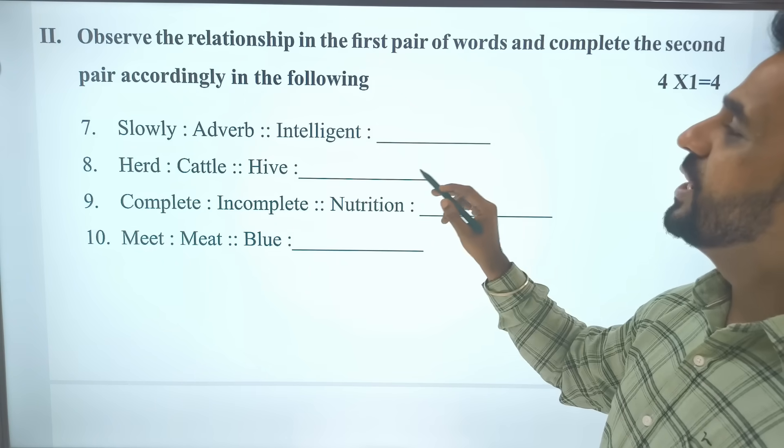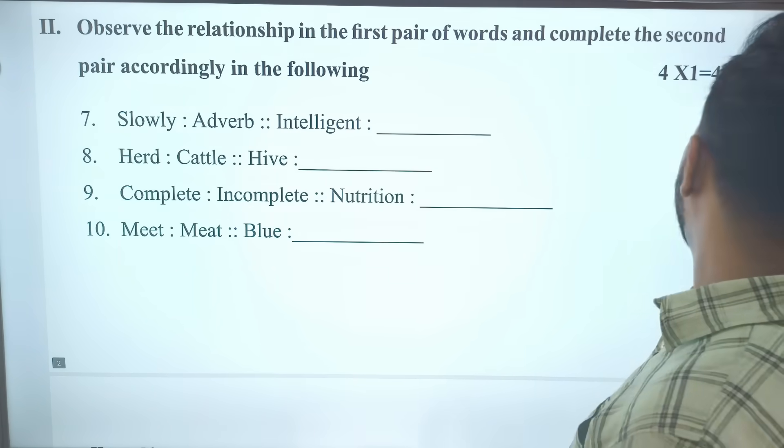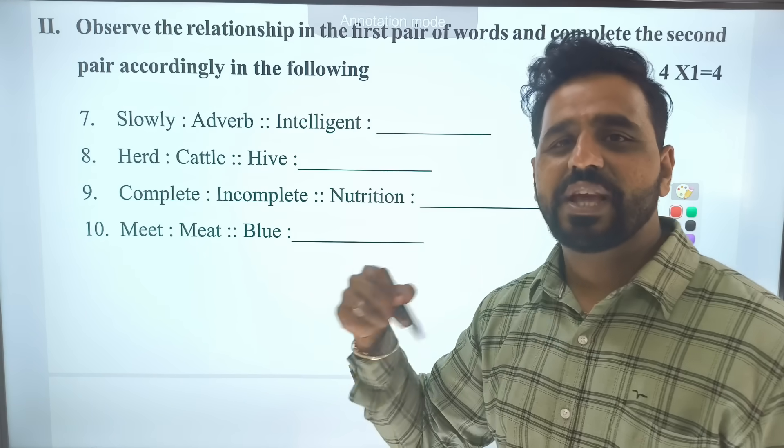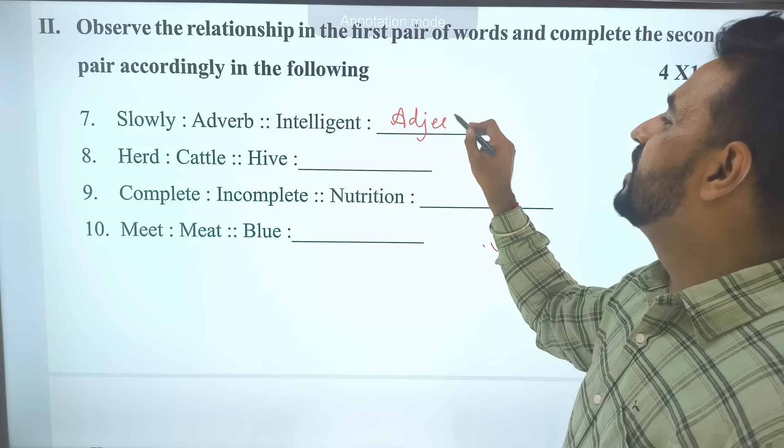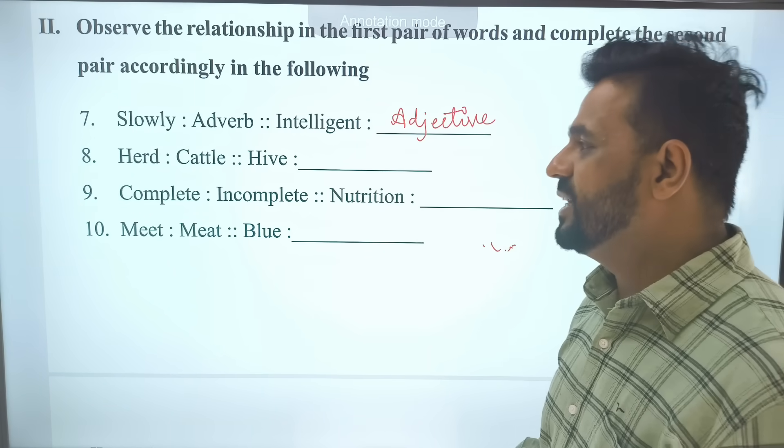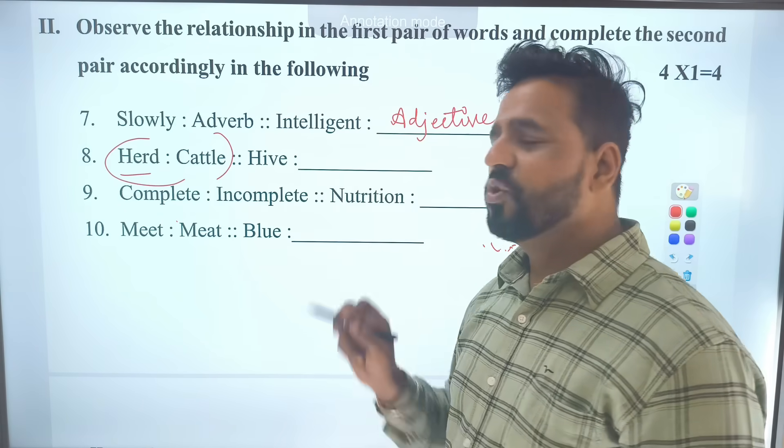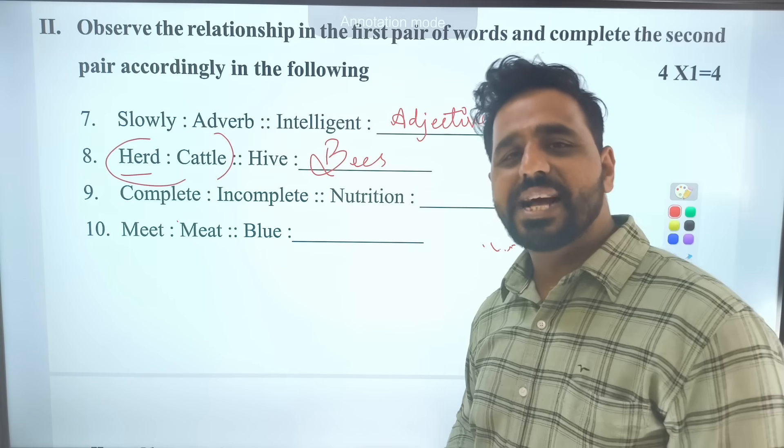Slowly is adverb. Then intelligent is an adjective. Why? Because it describes noun. He is an intelligent boy, she is an intelligent girl. That means which describes anything related to noun, we call it adjective. Then group of cattle we call it herd. Group of bees we call it hive.